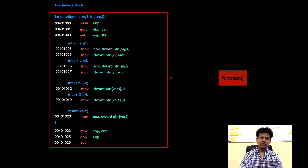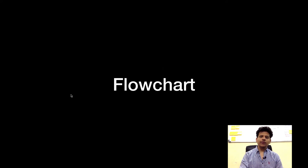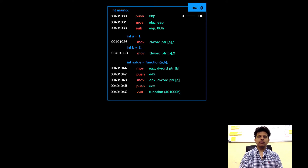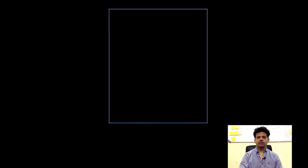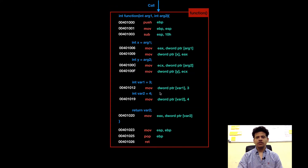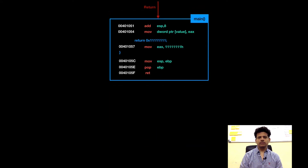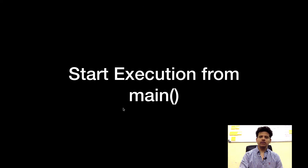Let's look at our assembly code. This is our C program's equivalent assembly code. This is assembly code for function, and this is assembly code for main. Let's look at our program flowchart. Main is calling function, and then function is returning to main.